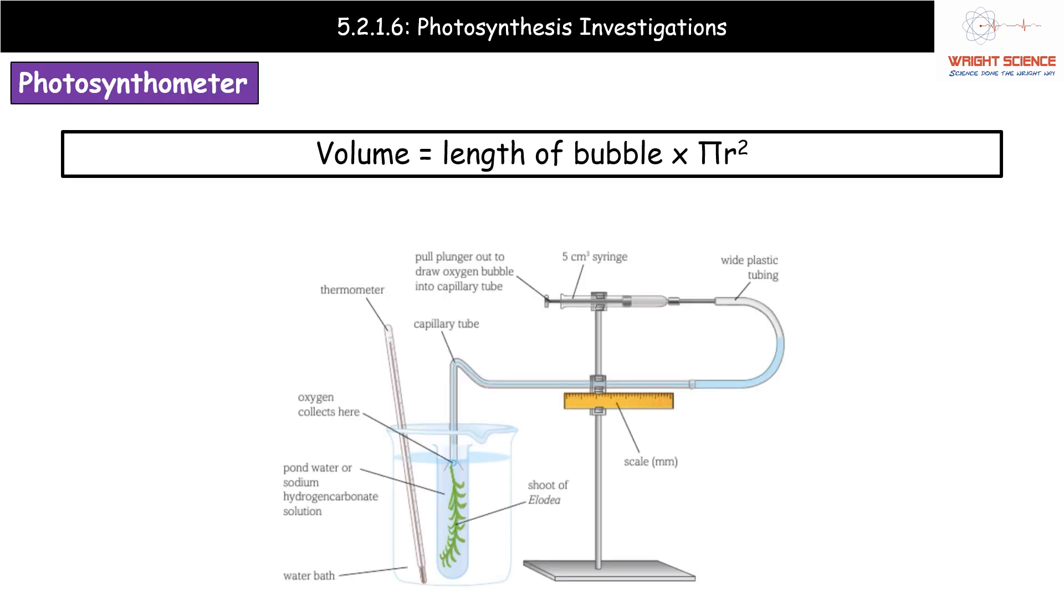At A-level, I'm hoping you have seen, even if you haven't used it, at least seen the setup of this thing here. This bit of equipment looks super fancy, it's called a photosynthometer. That is basically a flashy scientific biology way of saying we've got a teeny tiny tube on a scale, because that's pretty much what this is.